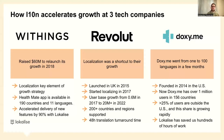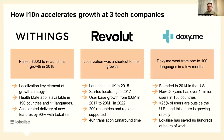Revolut — I personally interviewed someone from their team who said localization was a shortcut to their growth process. They used localization as an opportunity to predictably grow, identifying it as a key element in their growth toolkit. They started localizing in 2017 when their user base was 0.6 million. Five years later, they have more than 20 million users, are present in 200 countries and regions, and their translation turnaround time is 48 hours — from a developer pushing new strings to translation, revision, and deployment. That's truly world-class.